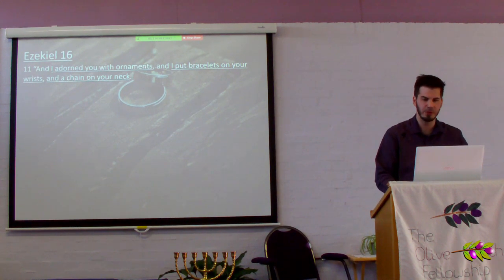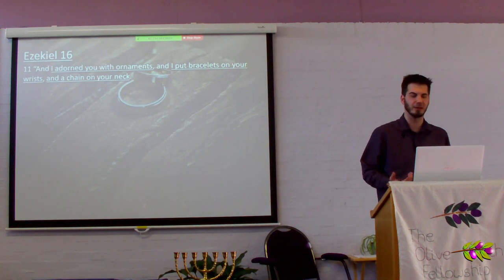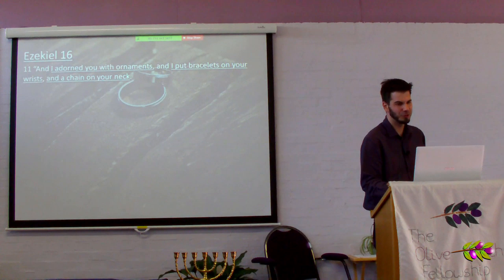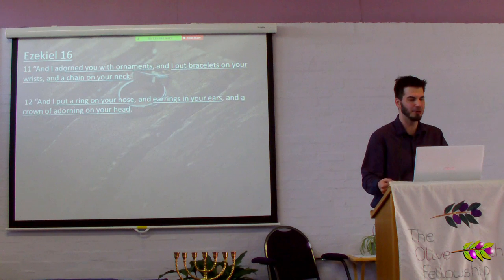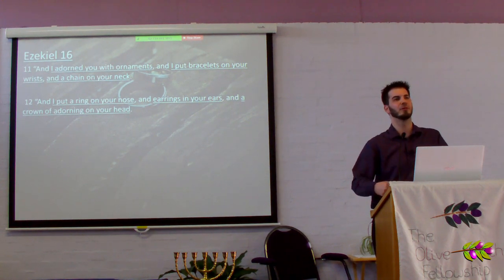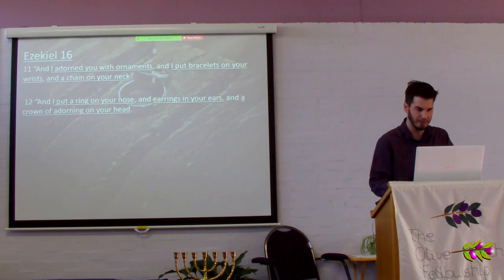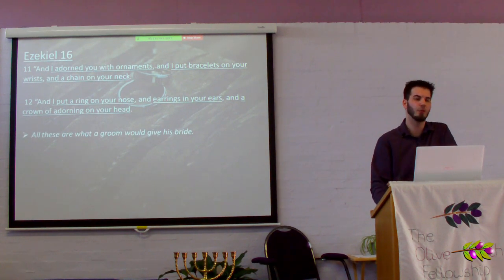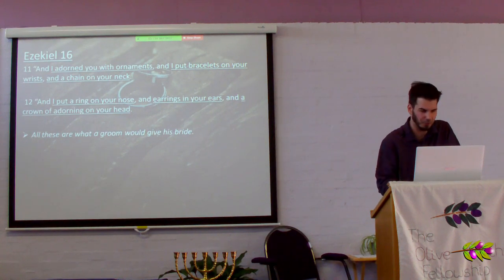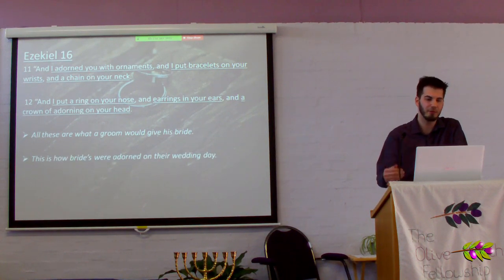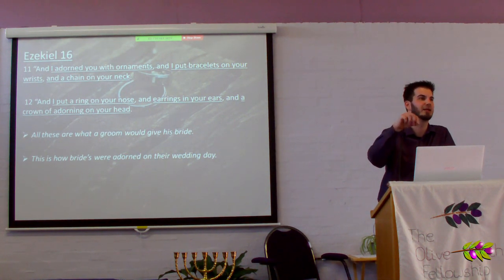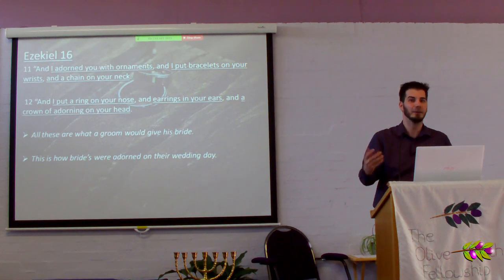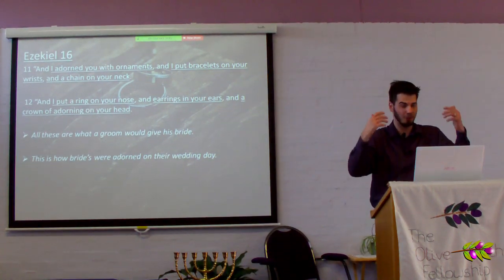'And I adorned you with ornaments, put bracelets on your wrists, a chain around your neck, a ring on your nose, earrings in your ears, and a crown of adorning on your head.' If you understand the ancient culture, you'll know what's going on here — all these are what a groom would give to his bride. This is how the brides were adorned on their wedding day. They were known as king and queen for that day — the bride and the groom — and this is where the idea of the crowns comes from.